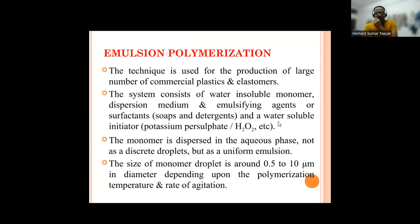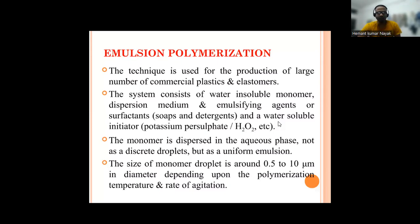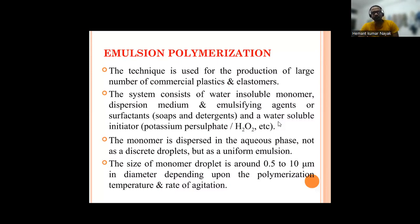Next is the important technique: emulsion polymerization. This technique is used for the production of a large number of commercial plastics and elastomers. The system consists of a water-insoluble monomer, a dispersion medium, an emulsifying agent (surfactant — soap and detergents), and a water-soluble initiator such as potassium persulfate. The monomer is hydrophobic.